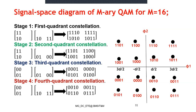This procedure was done for M = 16. For M = 32, that is 2^5, and for M = 64, that is 2^6, meaning 6 bits per symbol.